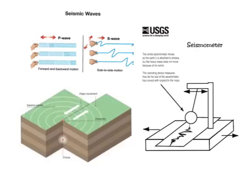There are two types of seismic waves: P waves and S waves. P waves are faster and go forwards and backwards, while S waves are slower, cannot go through liquids, and move in side-to-side motion.